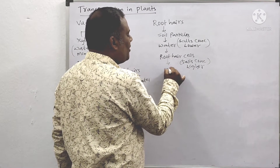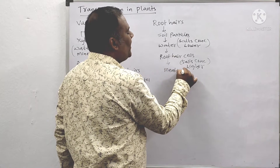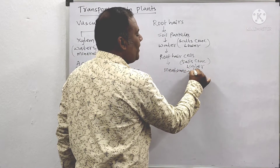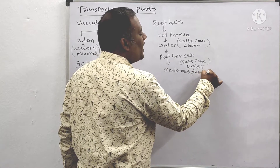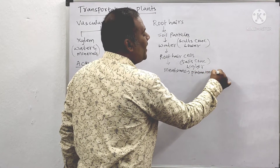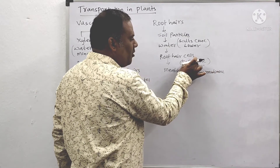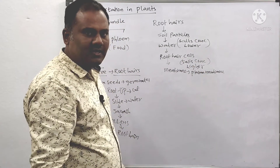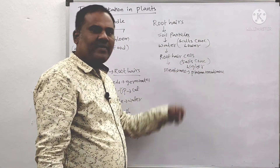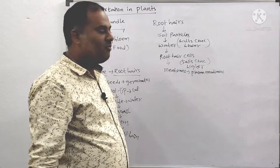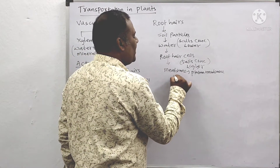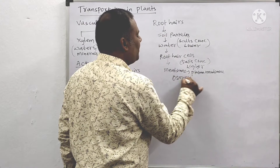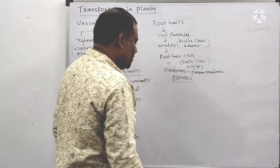You know that the membrane surrounding the root hair is acting as a plasma membrane. Wherever one side has a lower concentration and another side has a higher concentration, and if a plasma membrane is present, then a process called osmosis occurs automatically.